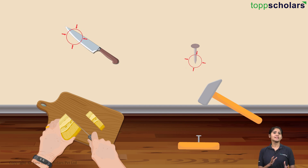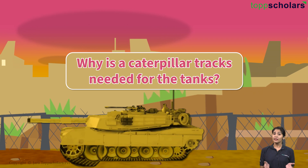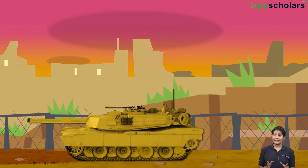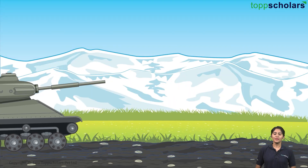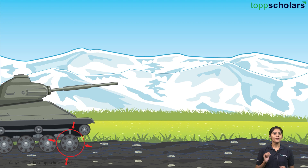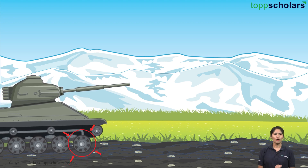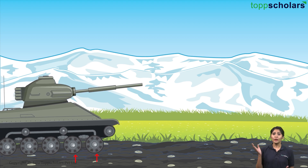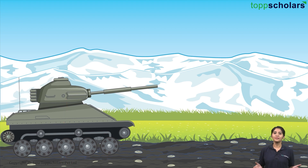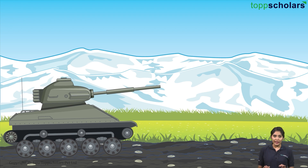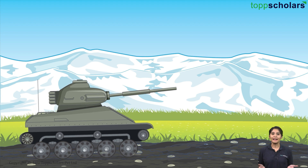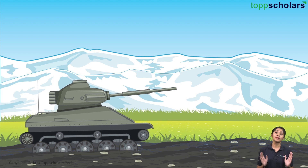Now let's see if we can answer our original question using this concept. Why is a caterpillar track needed for tanks? We know that tanks are very heavy, so to lower the pressure on the ground, caterpillar tracks are used. Imagine if there were no caterpillar tracks — the wheels would be directly touching the ground. Look at how tiny the contact areas are. All the weight of the tank, that huge force, would be concentrated in these tiny spots, just like a nail. As a result, there would be very high pressure on the ground, which could break the ground. There is a good chance the tank would get buried under the ground and it would be pretty hard for it to move.